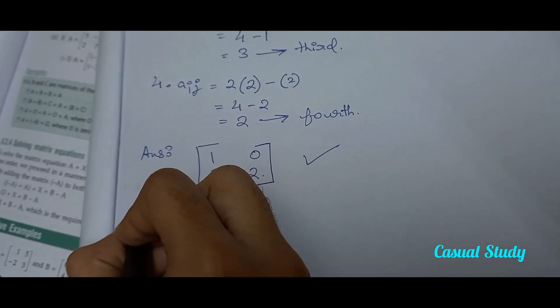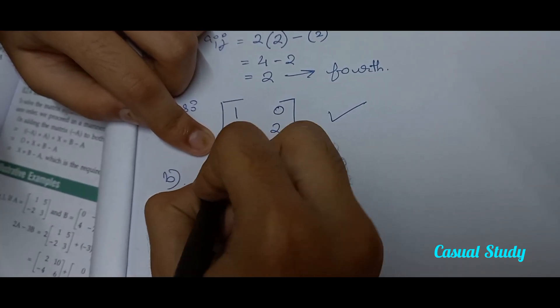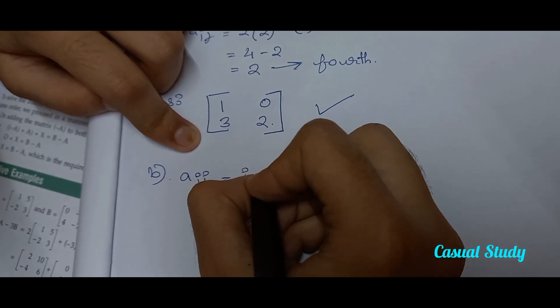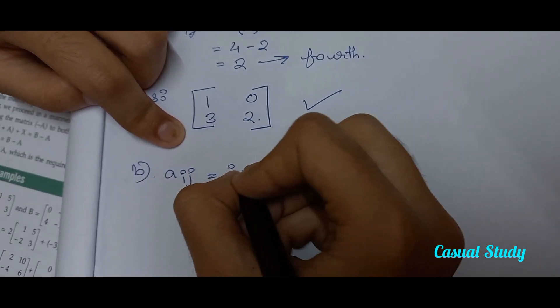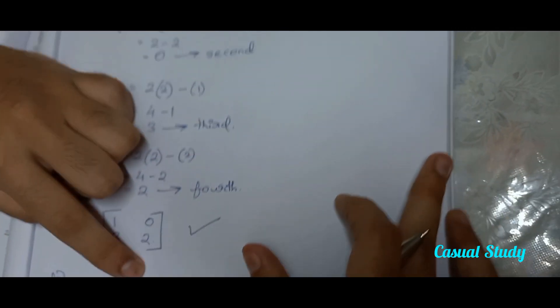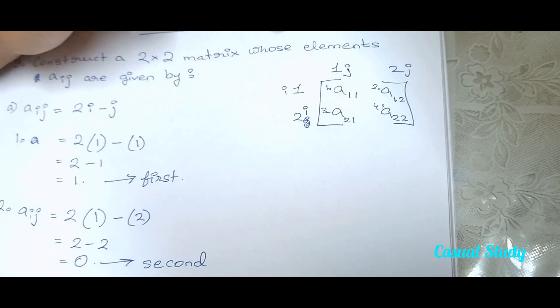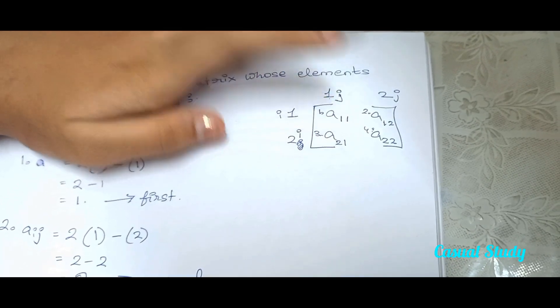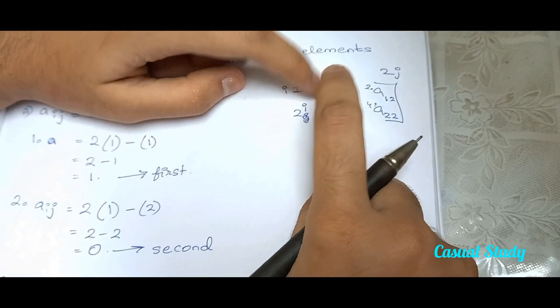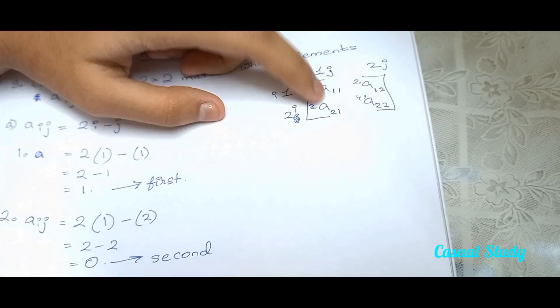Next, the equation is A[i,j] equals i times j. It's going to be easy. So we are going to use the same 2 by 2 matrix, since it's part of the same question — construct a 2 by 2 matrix with elements A[i,j] given by this equation. For the first element, A[i,j] equals i times j. Our i here is 1 and j is also 1.